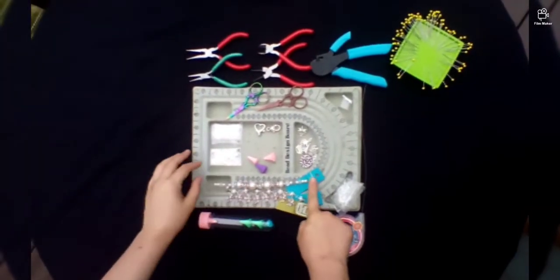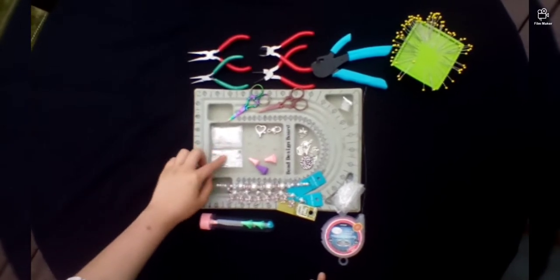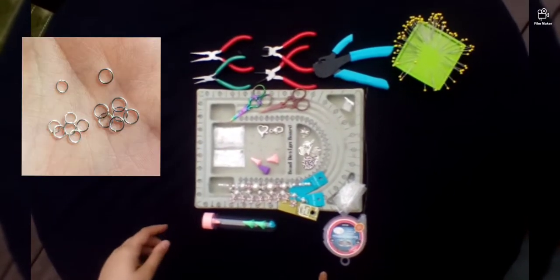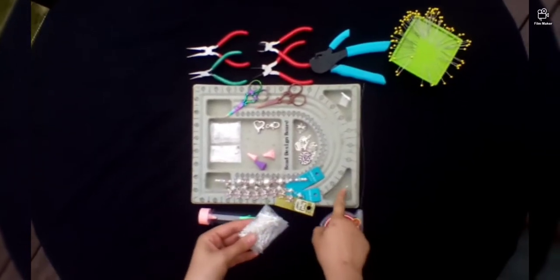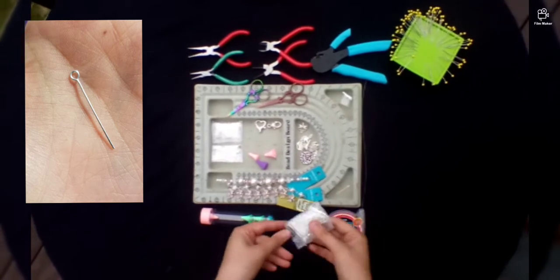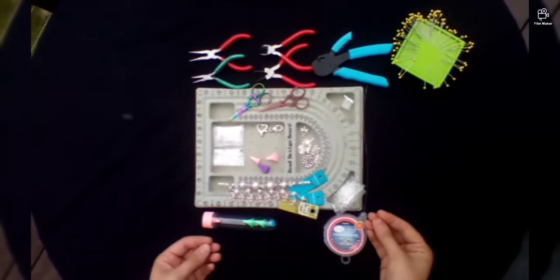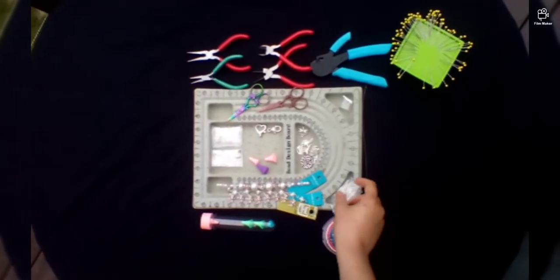You will also need a jump ring or two. I've got a couple different sizes and we'll pick what's best suited when I get there. You'll also need one or two of these eye pins. They might be flat on the bottom and look more like nails. They will work equally well. If you've got some that are a little longer, that's fine too, you can cut off the excess.